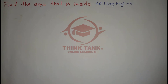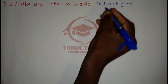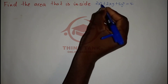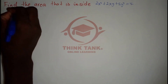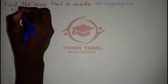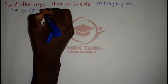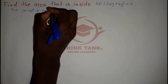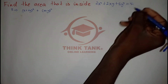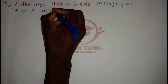First of all, I'm going to complete the squares — that will help me choose my Jacobian transformation. So completing the squares on the equation, I get (x + 2y)² + (x - y)².